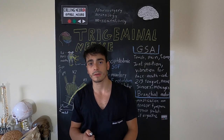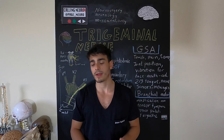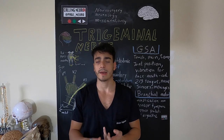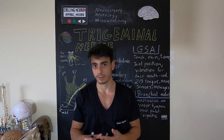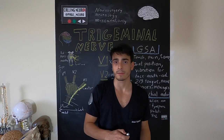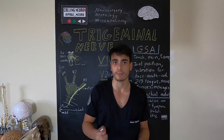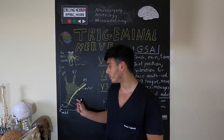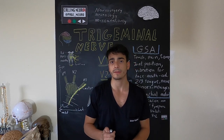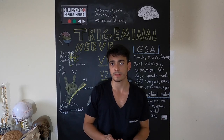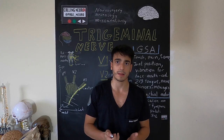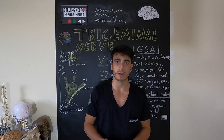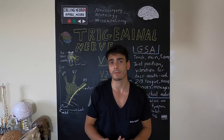The motor division innervates not only the muscles of mastication — which are the temporalis, masseter, lateral and medial pterygoids — but also other muscles innervated by the V3 division: the tensor tympani, tensor palatini, mylohyoid, and the anterior belly of the digastric.